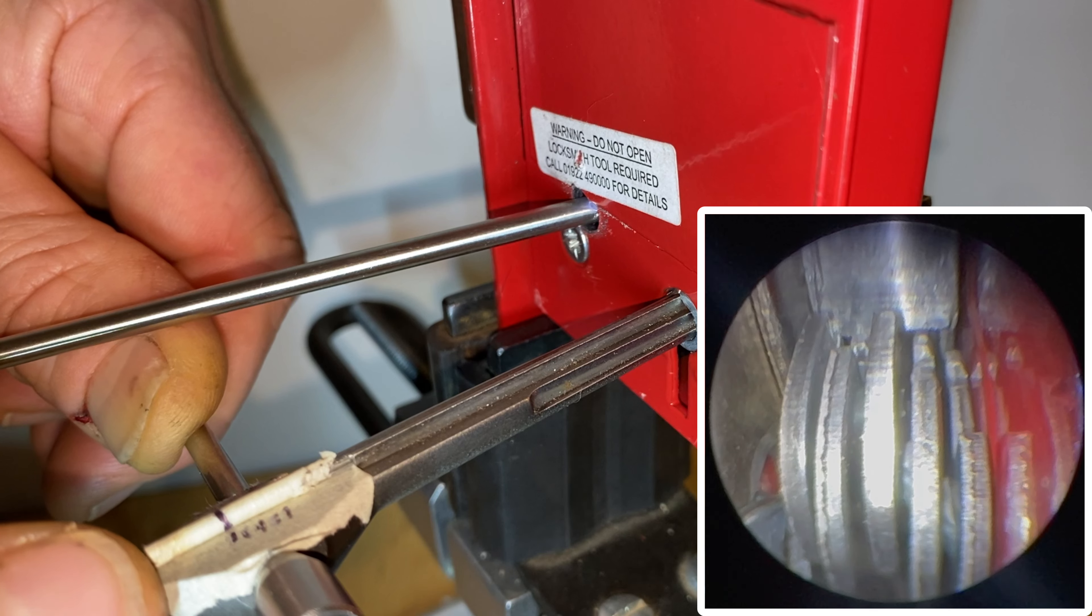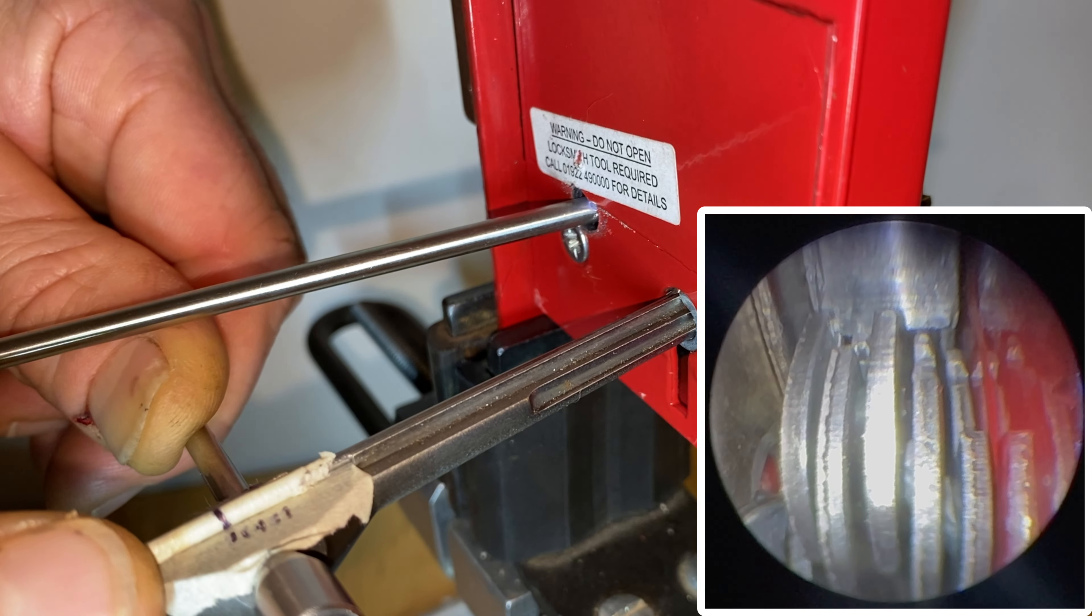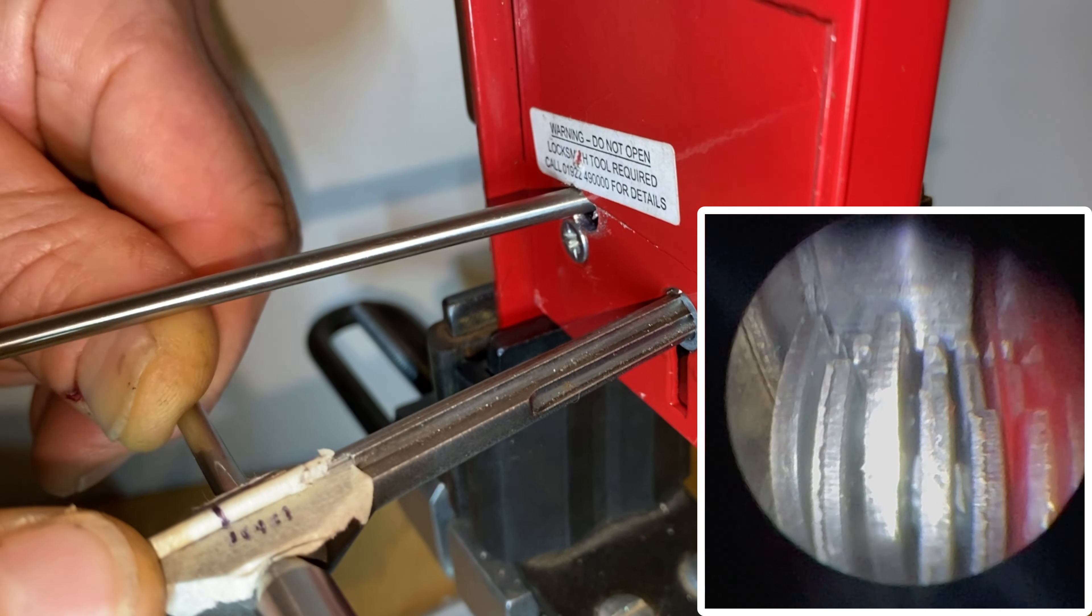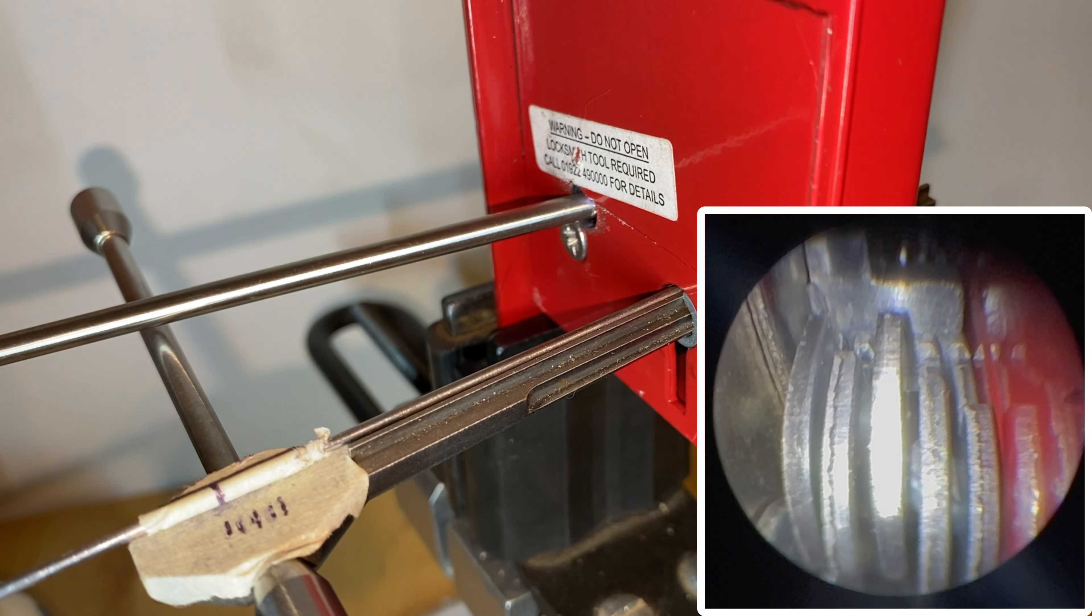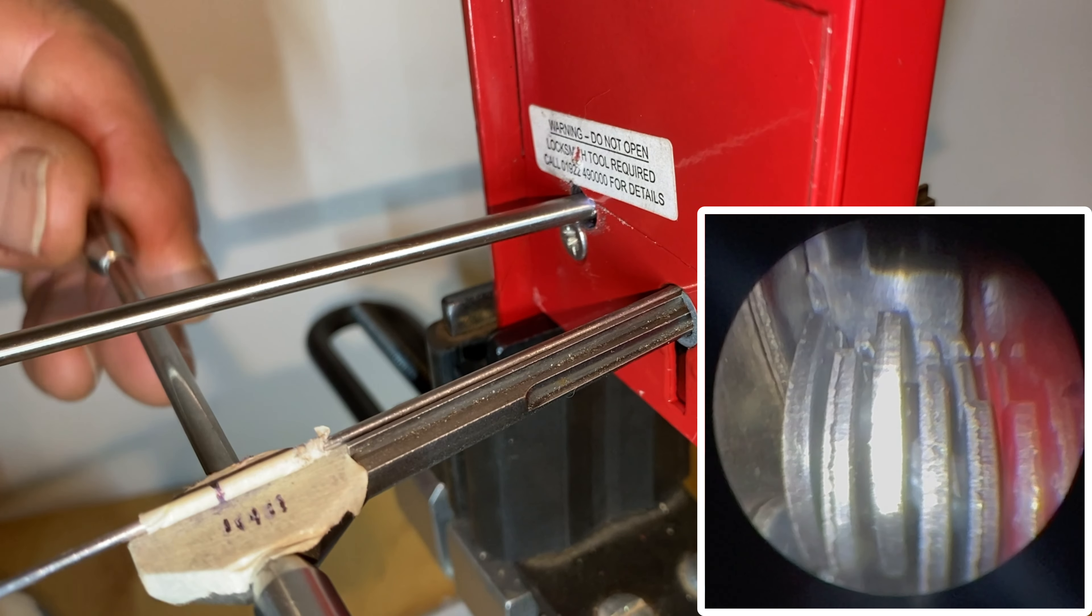And then if we get to lever one, that's really bound now. If we lift that up, keep lifting up to where the true gate is on that lever, you can see the bolt stump slides into the lever pack and we've got an open on the lock.